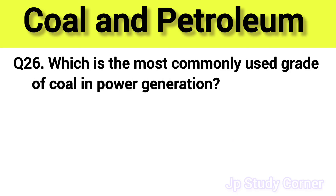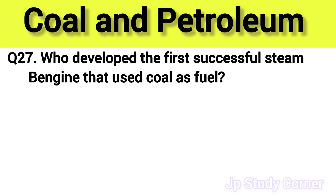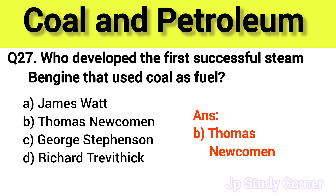Question number twenty-six: which is the most commonly used grade of coal in power generation? The right answer is option B — bituminous. Question number twenty-seven: who developed the first successful steam engine that used coal as fuel? The right answer is option B — Thomas Newcomen.